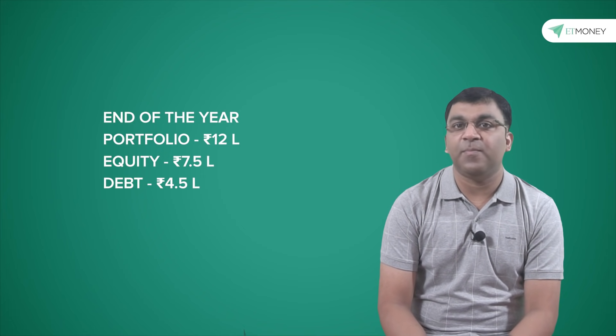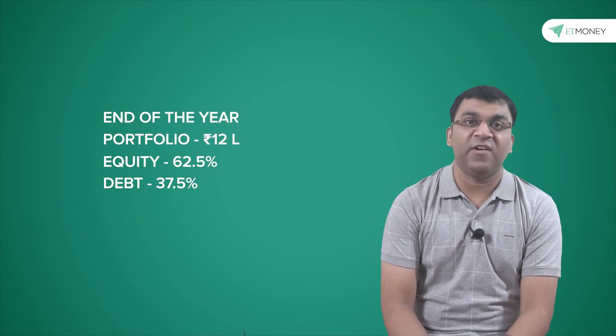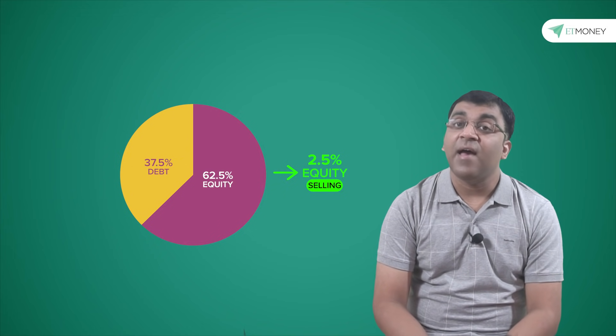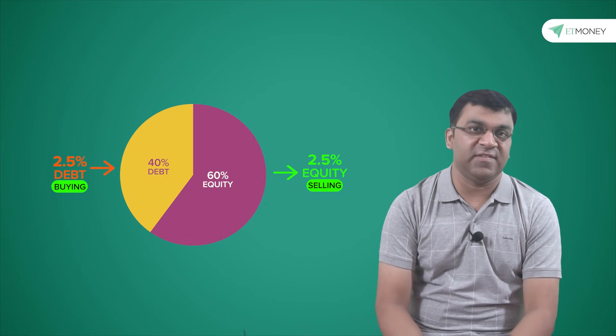From an asset allocation perspective, your portfolio's equity portion is now at 62.5%, while debt is at 37.5%, which means equity is 2.5% in excess while debt is short by 2.5%. And this is where rebalancing comes in, because to get the asset mix back to 60-40, you will have to sell 2.5% of equities and buy 2.5% of debt to get your portfolio back to its original state.